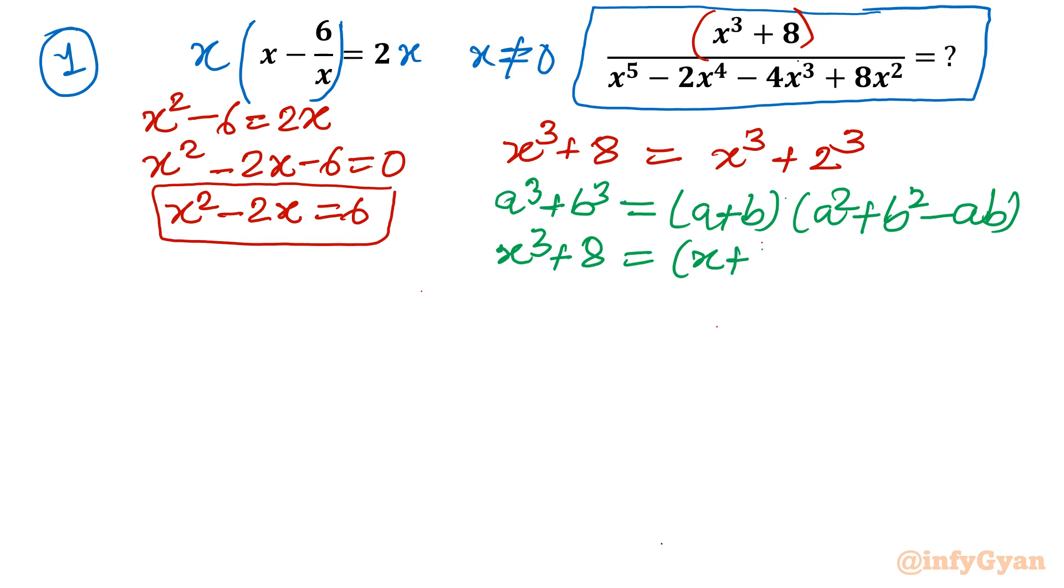So it's x plus 2. So x square plus b square, so 2 square is 4 minus ab, so minus 2x, or x plus 2. In bracket I can write x square minus 2x plus 4. Now you can see x square minus 2x is 6. So here I can write 6. So finally it will become 10 times x plus 2. This is our numerator.